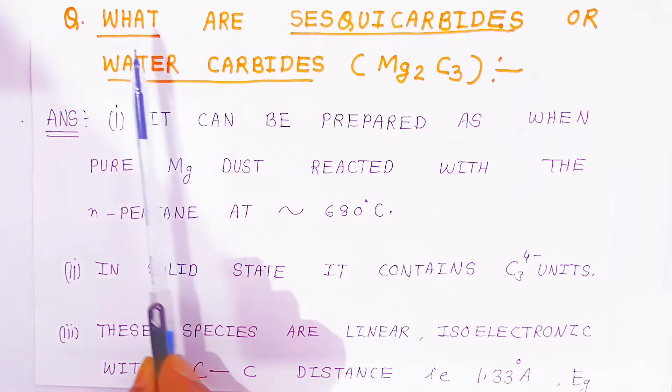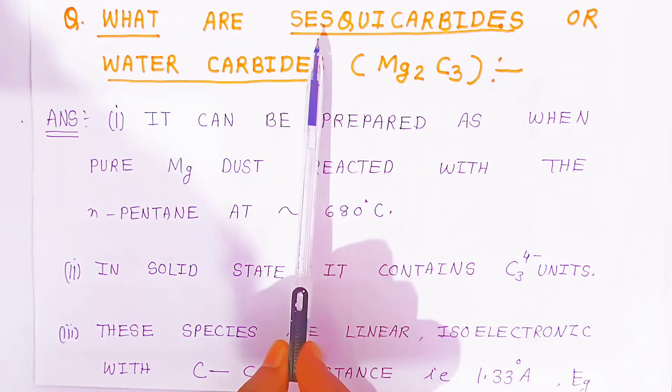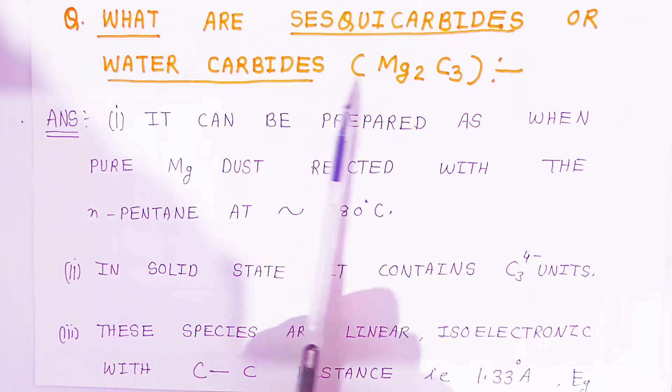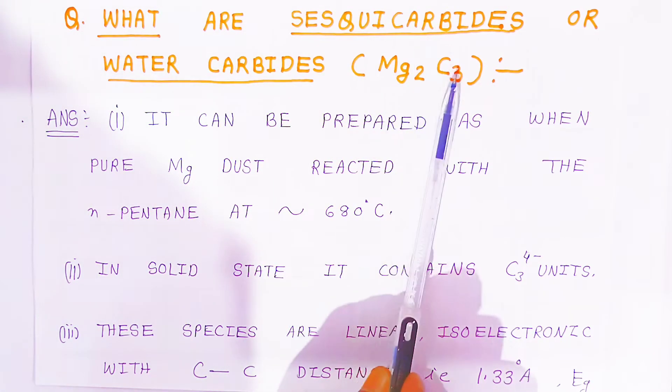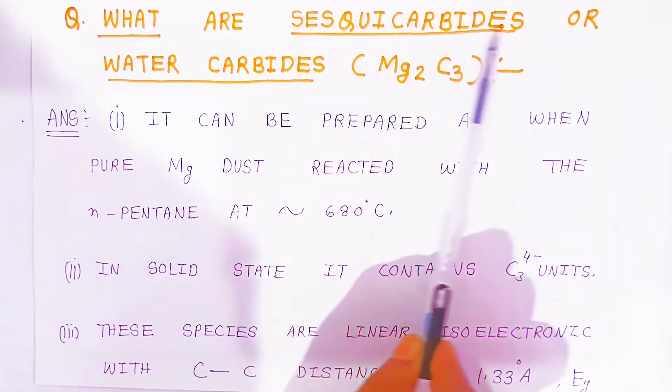In this video we are going to see what are sesqui carbides. Sesqui carbides are also called water carbides. The formula is Mg2C3. So magnesium carbide is called sesqui carbides or water carbides.